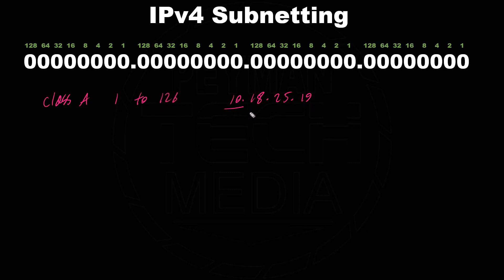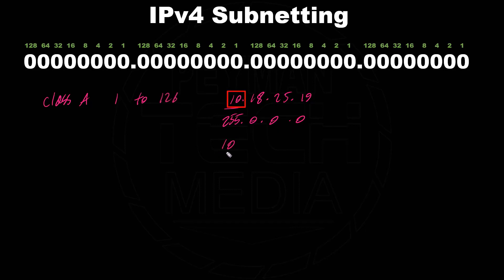The default subnet mask for Class A is 255.0.0.0. The 255 means all 8 bits in the first octet are turned on — those are the network bits — and the zeros represent host bits. So in this example, we have 8 bits for network bits and 24 bits for host bits. So 10 is the network information, and 18.25.19 is the host information.